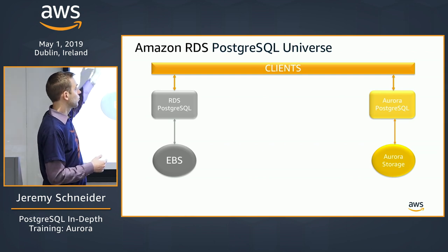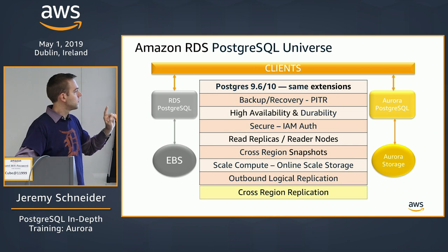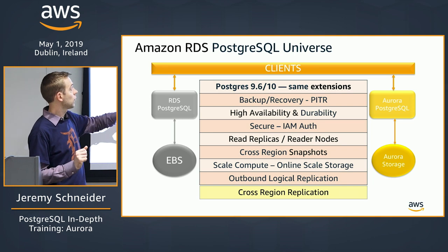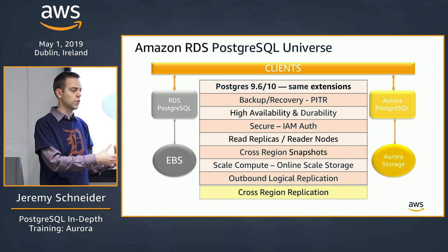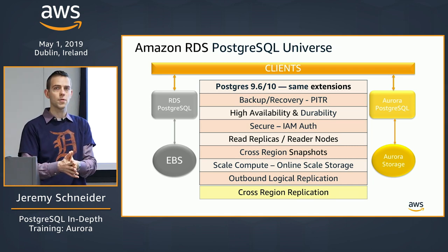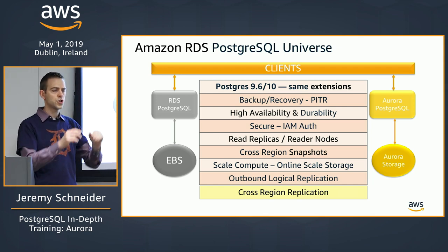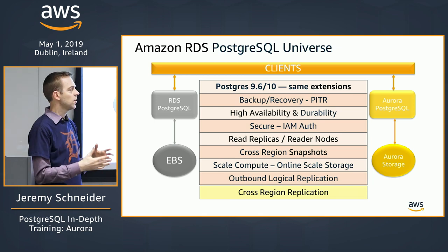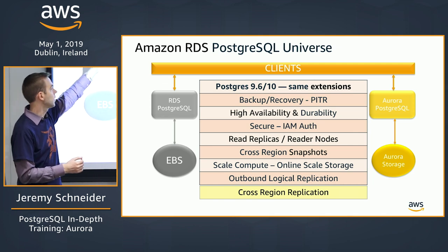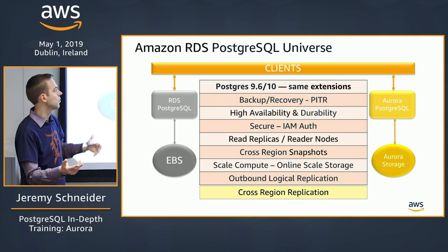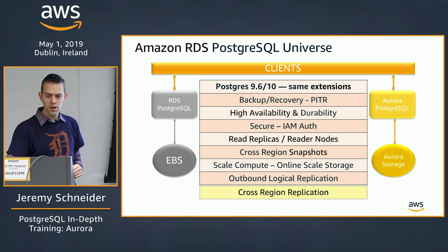From your client's perspective, RDS Postgres and Aurora Postgres look very similar. If you design an application to work on Postgres, whether it's open-source or RDS Postgres, that application will continue to work the same on Aurora Postgres. In addition to that client-level compatibility, there are also a lot of shared components in the orchestration layer — things like IAM authentication and S3 integration.